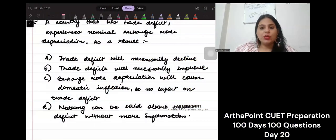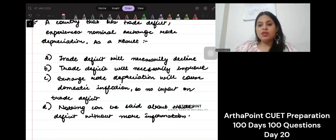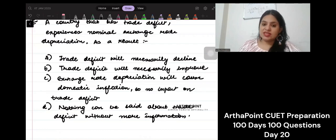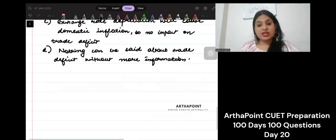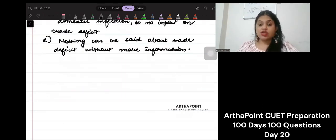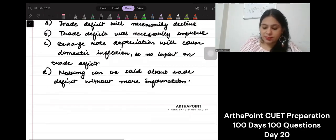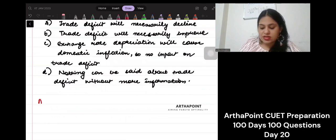Good evening everyone, let us go ahead and have a look at the next CUET question. It says a country has a trade deficit, experiences a nominal exchange rate depreciation. As a result, the trade deficit will necessarily decline, increase, cause inflation, so nothing will happen, or nothing can be said. This is a very good question.